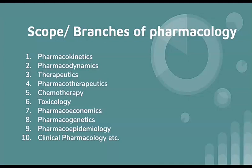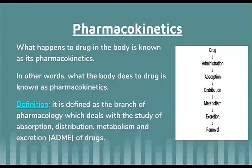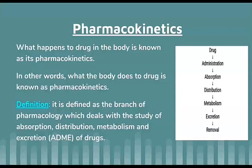Let's start with the first branch: Pharmacokinetics. What happens to a drug in the body is known as Pharmacokinetics. Let's take an example of a tablet. When we administer a tablet orally, the drug is released into the GIT. Then what happens to the drug in the body is called Pharmacokinetics. It gets absorbed into the blood, then distributed to various parts of the body, next it gets metabolized, and finally it gets excreted or removed from the body. So this is called Pharmacokinetics. In other words, what the body does to the drug is known as Pharmacokinetics.